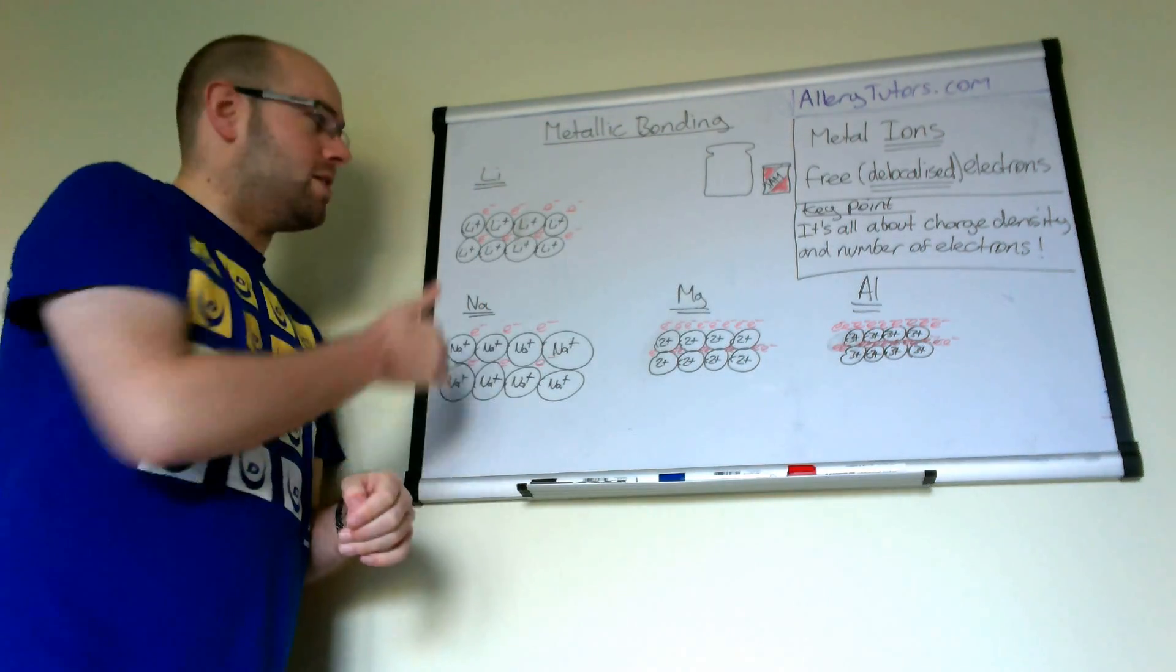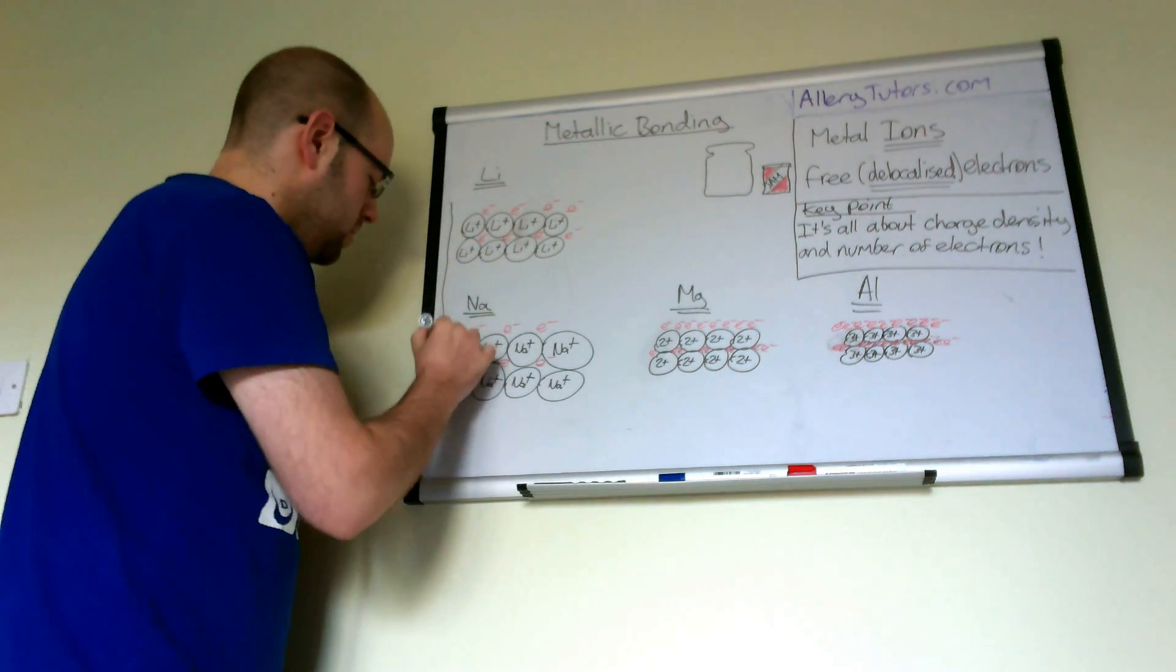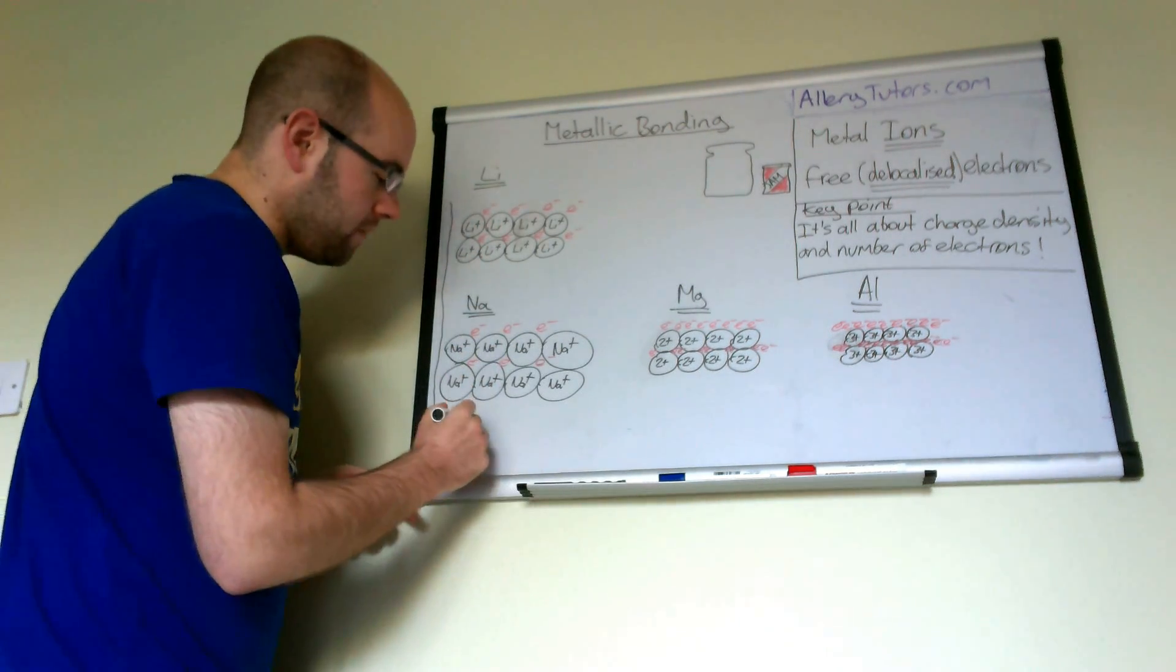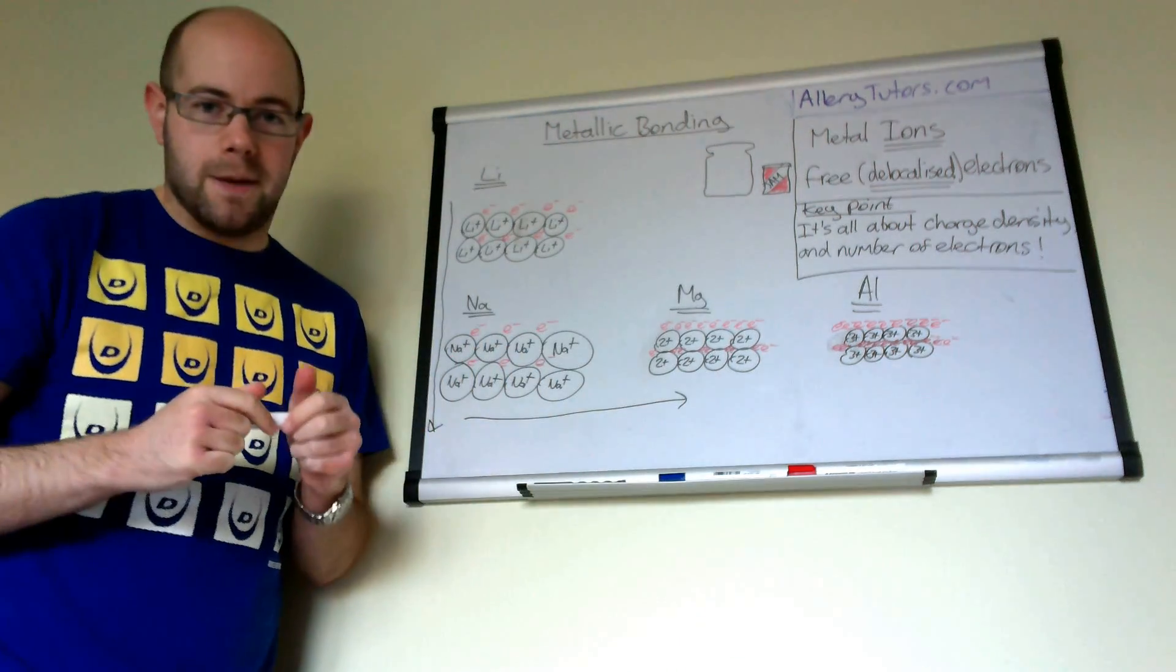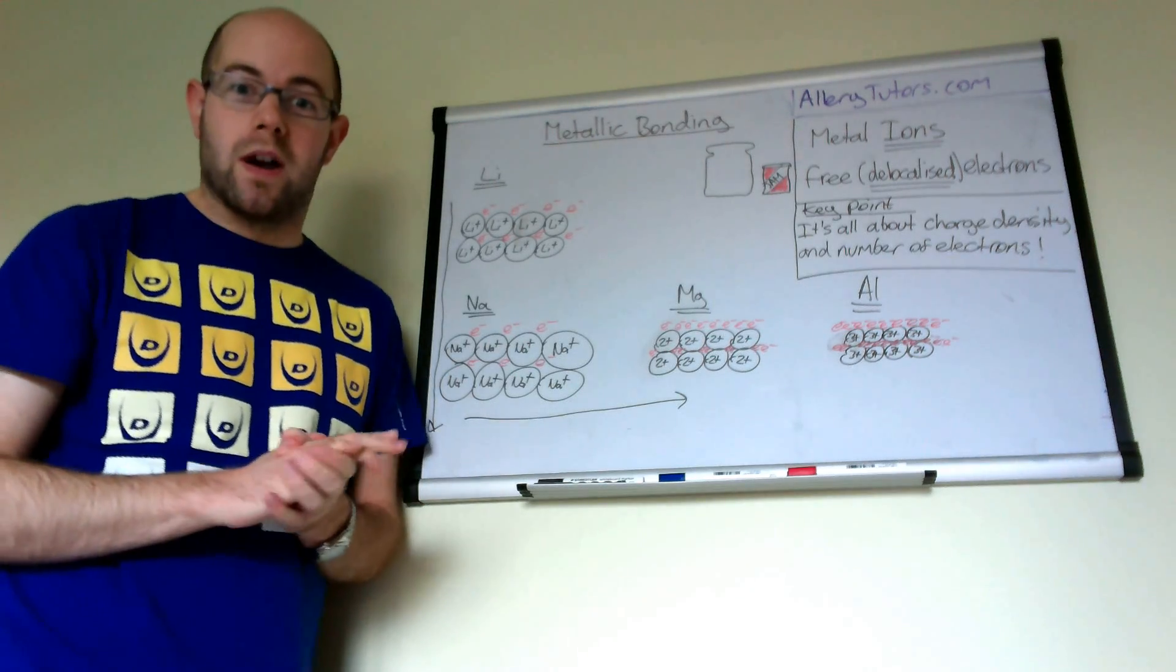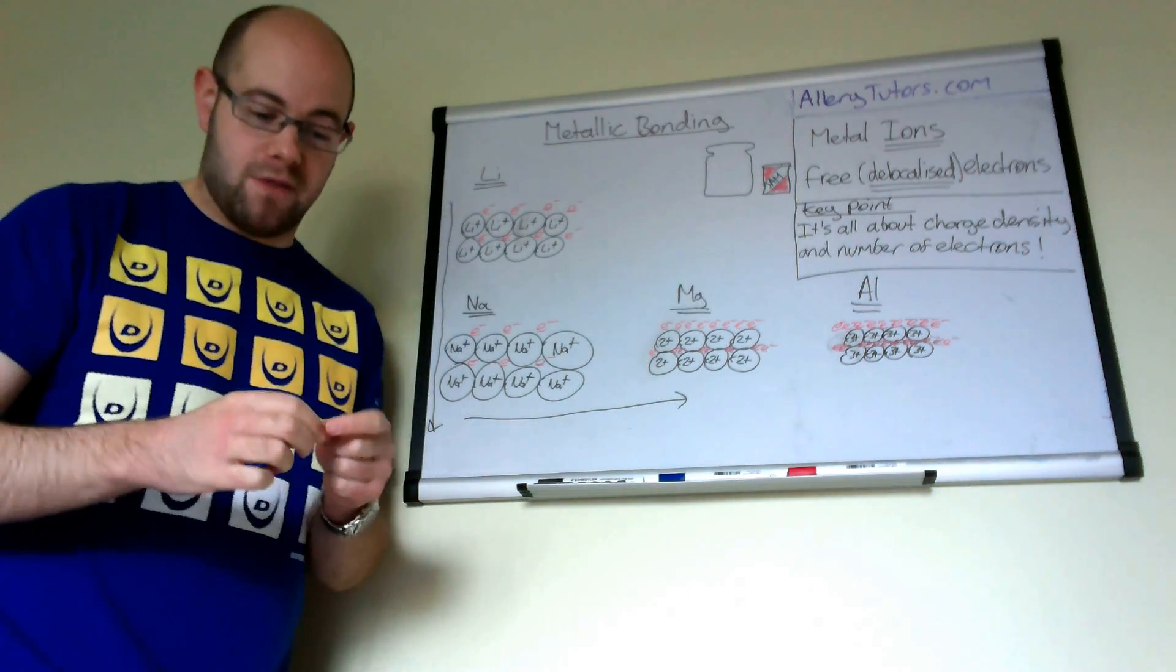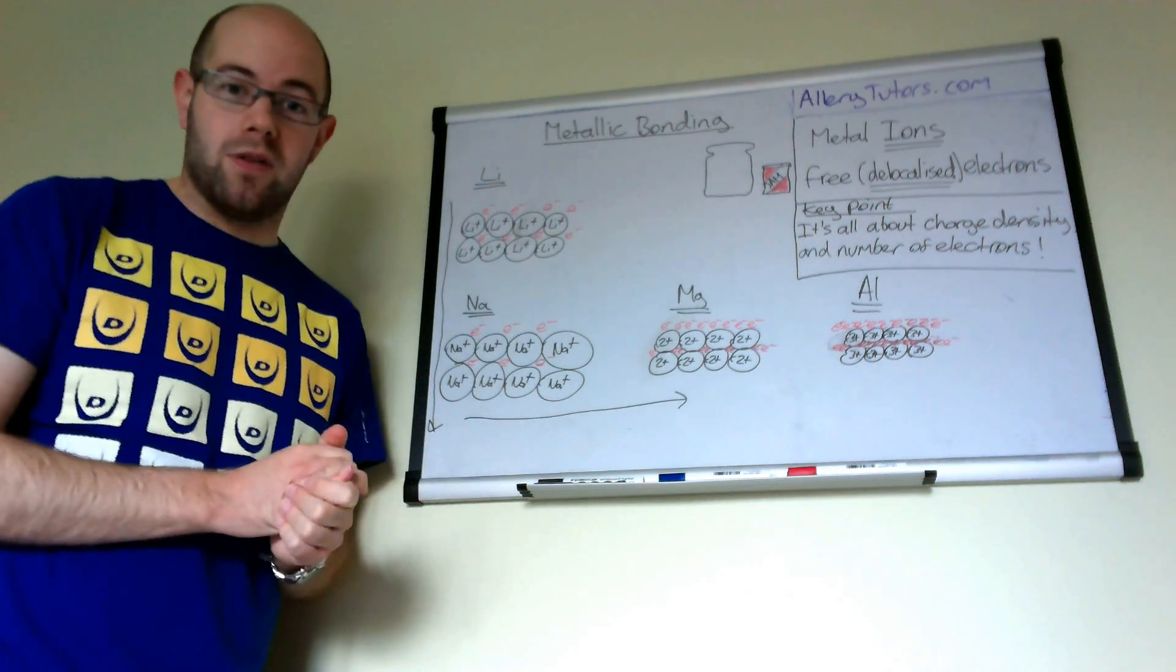Moving down group one to sodium and then across to magnesium. Magnesium compared to sodium is stronger. It's still not that hard, you can tear magnesium ribbon with your hands, but it's harder than sodium.